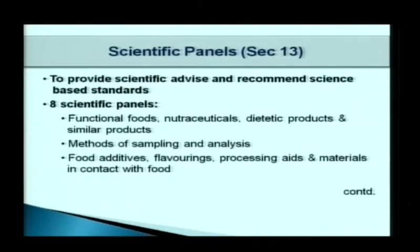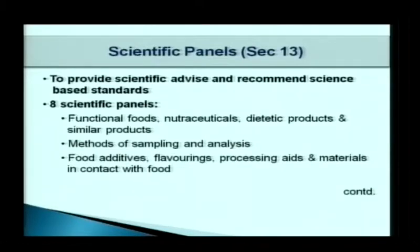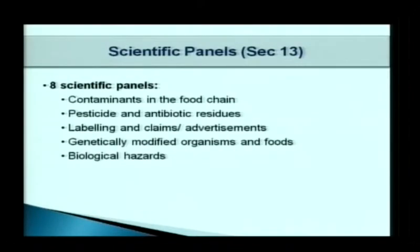There are scientific panels for framing science-based standards and food safety issues. Initially there were eight scientific panels covering: functional foods or nutraceuticals; methods of sampling and analysis; food additives; flavouring substances, processing aids and materials in contact with food; contaminants in food supply chain; pesticide and antibiotic residues; labelling and claims advertisement; and genetically modified organisms and foods and biological hazards.